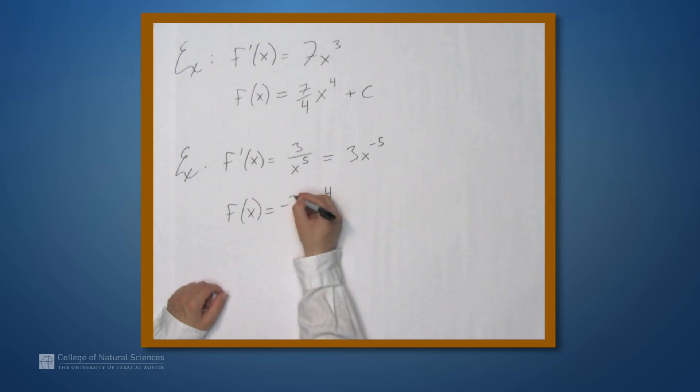Well, that means that it's negative 3 over 4. And not forgetting the plus c, we find that f(x) is (-3/4)x⁻⁴ + c.